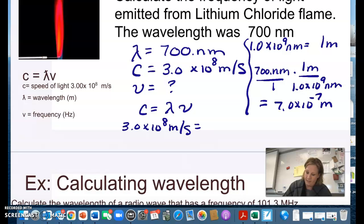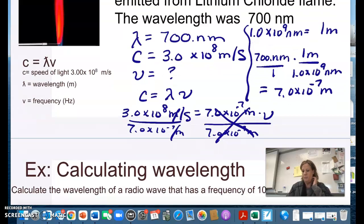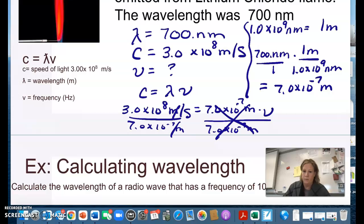So now I can plug that in over here and then I'm going to be solving for nu which is frequency. So I would divide both sides by that wavelength and you can see my units cancel. So I end up with 1 over second or inverse second which is also a hertz. So ultimately my answer is 4.3 times 10 to the 14th and you could give that as 1 over second or inverse second or hertz.